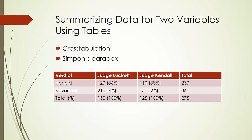But when this happens, we have to be very careful of something called Simpson's paradox. Simply put, Simpson's paradox is the phenomenon where opposite conclusions are drawn based on aggregate and un-aggregated data. Let's use an example to explain. Judge Luckett and Kendall presided over cases in common police court and municipal court over the last few years. Some of the verdicts were appealed. In most cases, the appeal court upheld the original verdicts, but in some other cases those verdicts were reversed.